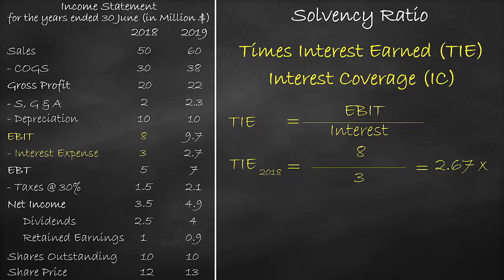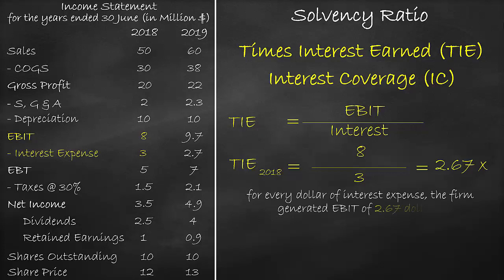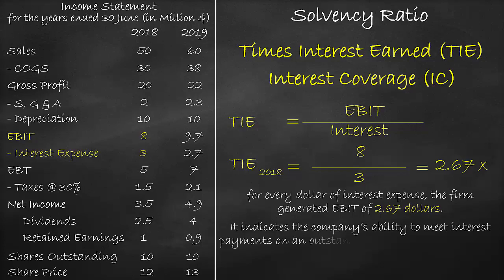The unit of the times interest earned ratio is times. This means that for every dollar of interest expense, the firm generates earnings before interest and tax of $2.67. It indicates the company's ability to meet interest payments on outstanding debt when they are due. It is healthy to be greater than one, and a higher ratio means that the firm has low debt financing.